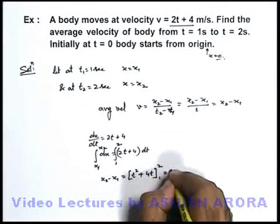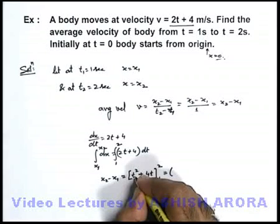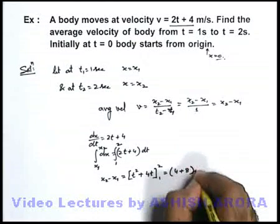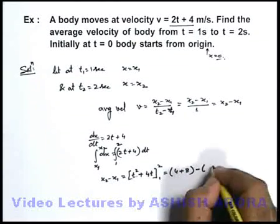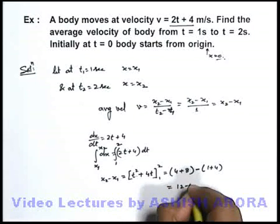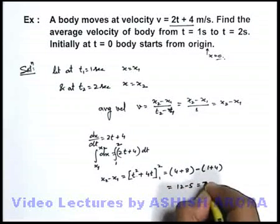On substituting the limits, with the upper limit it will be 2² is 4 plus 4 times 2 is 8, minus the lower limit that is 1 plus 4. So this gives us 12 - 5, that is equal to 7.